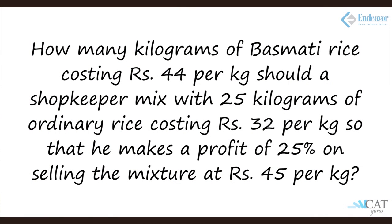We have two types of rice: basmati rice and ordinary rice. The price of basmati rice is 44 rupees per kg and ordinary rice is 32 rupees per kg. We are supposed to mix these two and arrive at a mean price, wherein I add 25 percent profit and sell the mixture at 45 rupees. Here 45 rupees is the selling price, and we need to identify the cost price of the mixture first, then use allegation to find the ratio.